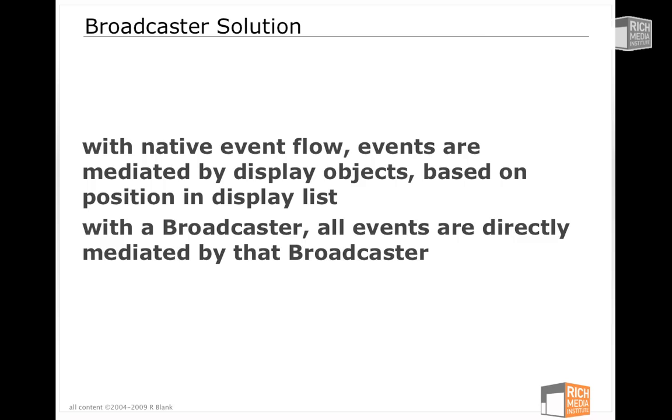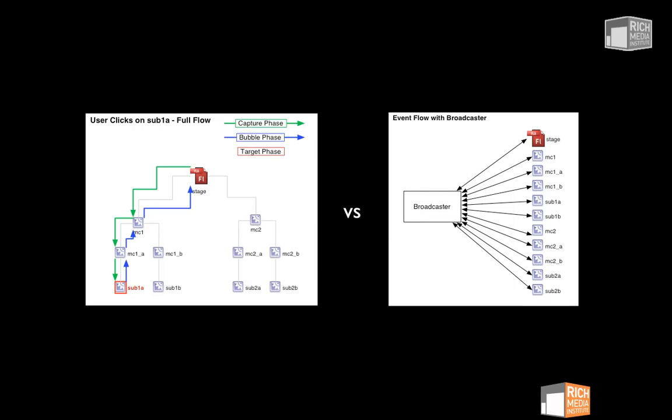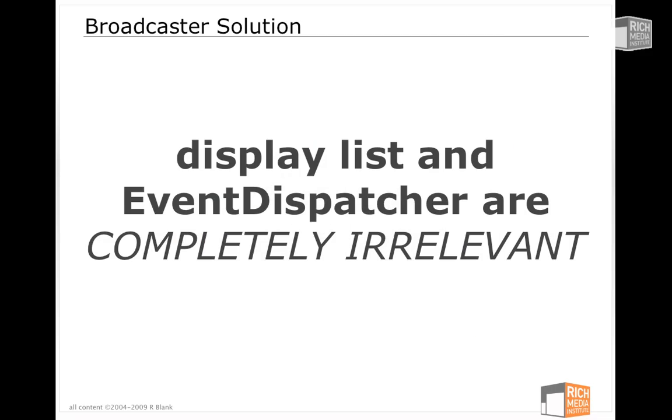There's only one broadcaster — that's why the fact that it's a singleton isn't just a throwaway line. On the left you'll recall what a normal event flow looks like: if the user clicked on sub1A, that's what it looks like. On the right, we can see the event flow with a broadcaster — it's one to n. Every object that wants to dispatch an event dispatches it on the broadcaster. Every object that wants to hear an event hears it on the broadcaster. All events go through the broadcaster. The display list and event dispatcher are completely irrelevant at this point.